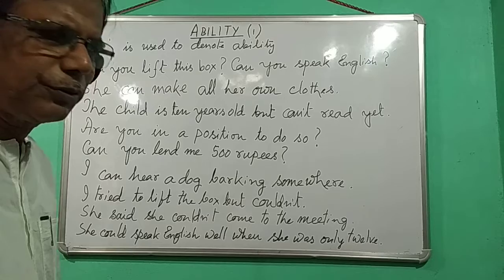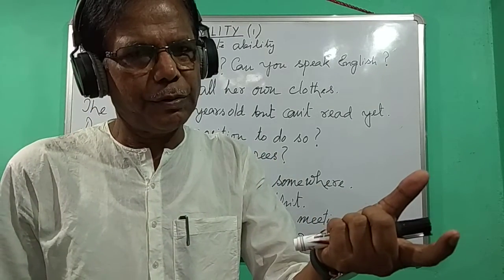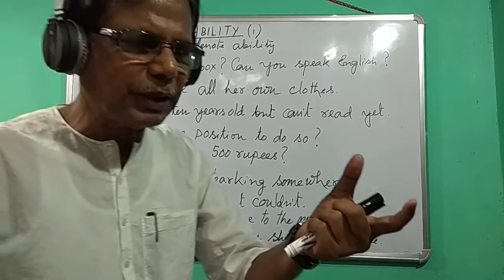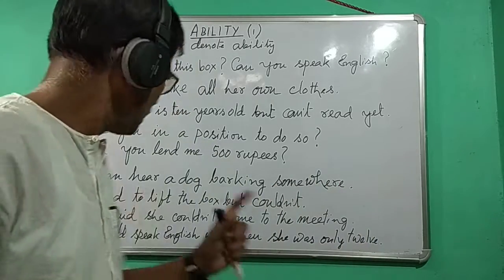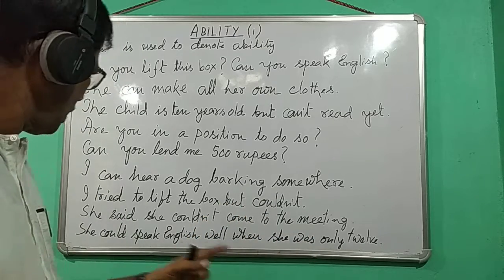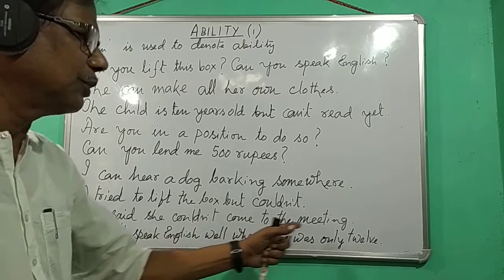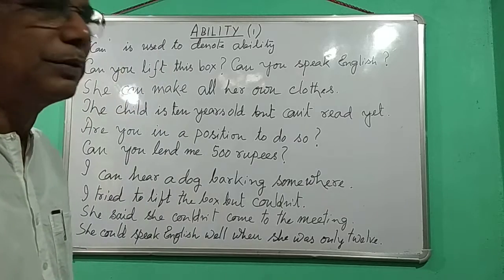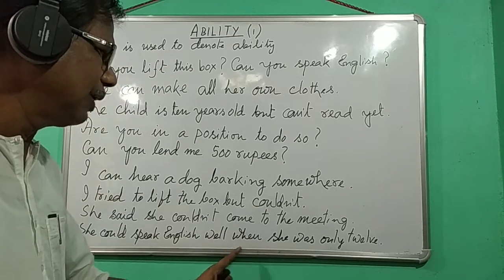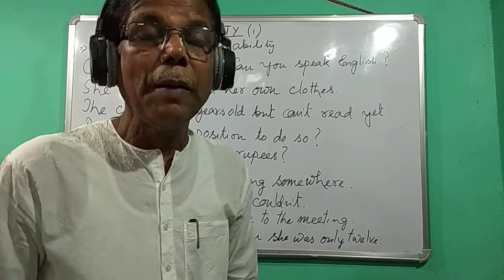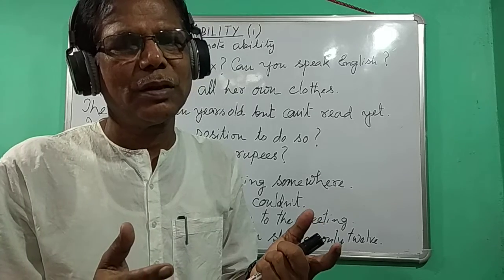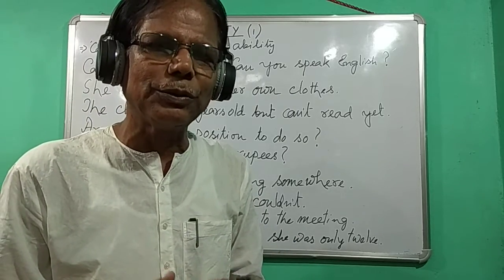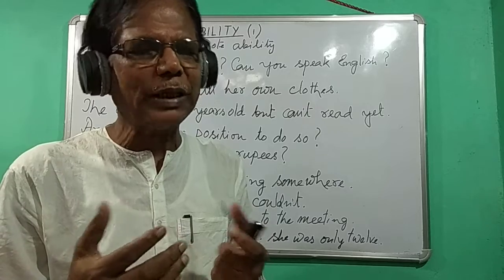I tried to lift the box, but could not. Can becomes 'could' in the past tense — cannot becomes 'could not'. She said she could not come to the meeting; she was unable to come to the meeting. She could speak English well when she was only 12. So to indicate ability, in present tense we use 'can', in past tense we use 'could'. Negative: cannot, could not — can't, couldn't.